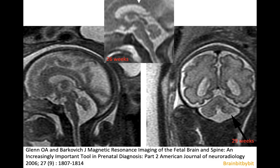Dandy-Walker malformation can be detected on intrauterine MRI. This is normal at 26 gestational weeks, and this is Dandy-Walker malformation. If you would measure the height of the vermis, you might be misled because of partial volume, so that's not useful. But you can look at the angle between the vermis and the tegmentum, which is increased because of the cyst in the posterior fossa. The problem with Dandy-Walker malformation is that there's no internalization of the rhombic lip, and on coronal images you can also see the hypoplasia of the cerebellum.